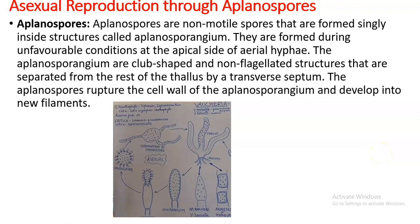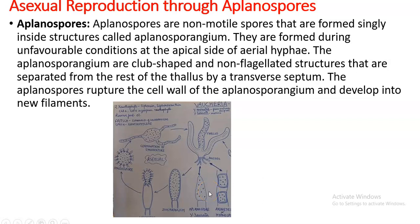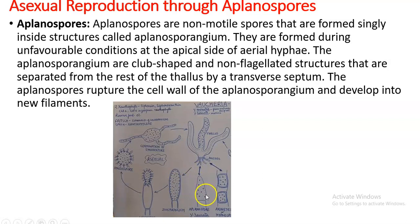Asexual reproduction through aplanospores is similar to synzoospore formation, with only one difference: the aplanospore has no flagella and does not move. In the case of marine Vaucheria species like Vaucheria hamata, you can see aplanospore formation. Only some species show synzoospore formation during favorable conditions such as spring and summer. In species like Vaucheria hamata, drought or unfavorable conditions lead to aplanospore formation.